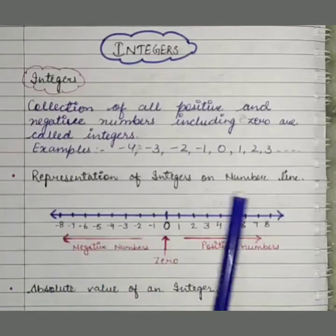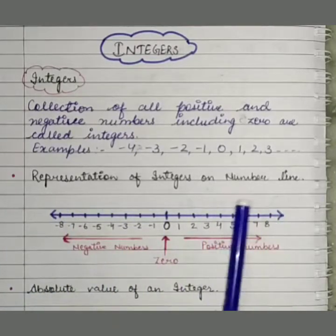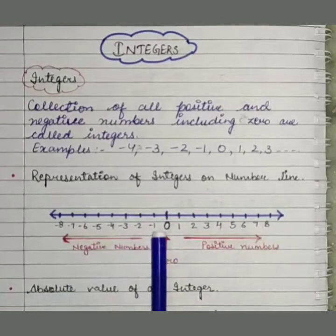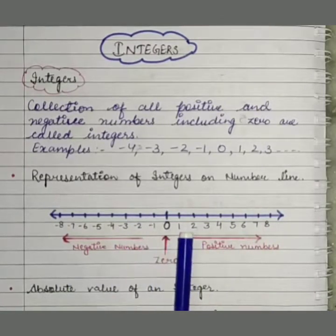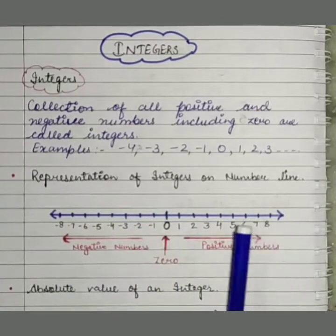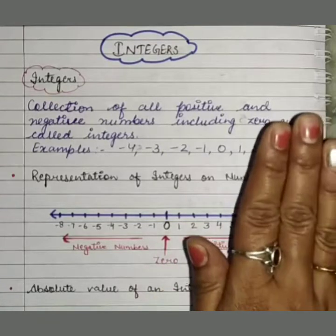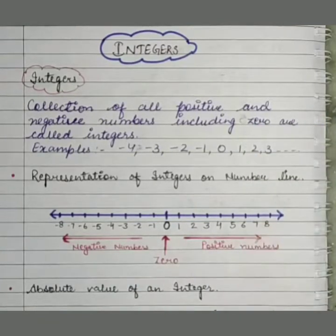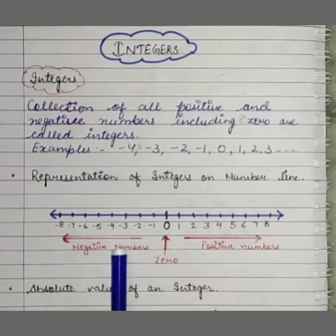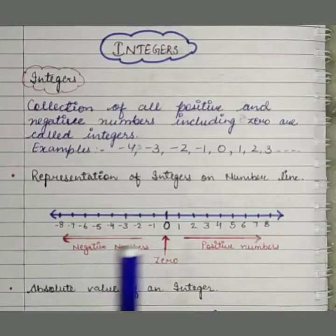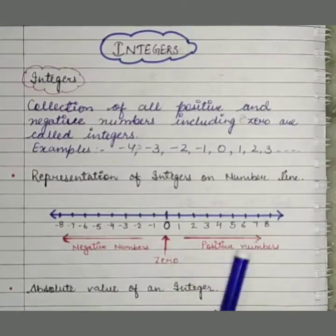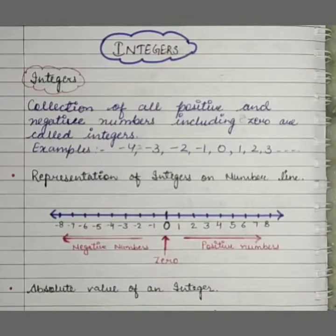These integers are represented on a number line. We can represent them on a number line. I will put 0 in between, and on this side — my right hand side — all positive numbers will come, and on the left hand side, negative numbers will come, and in between them 0 will be there. 0 will have neither a positive sign nor a negative sign.